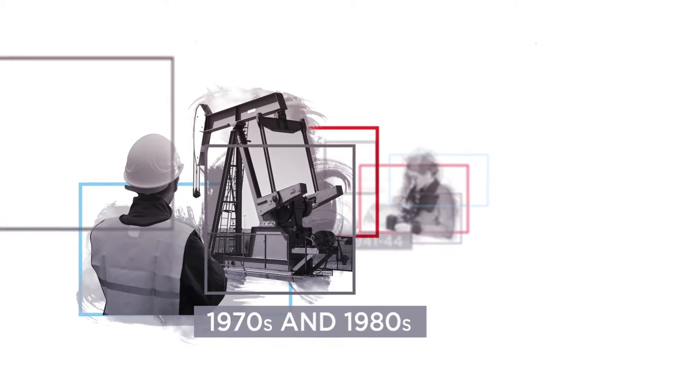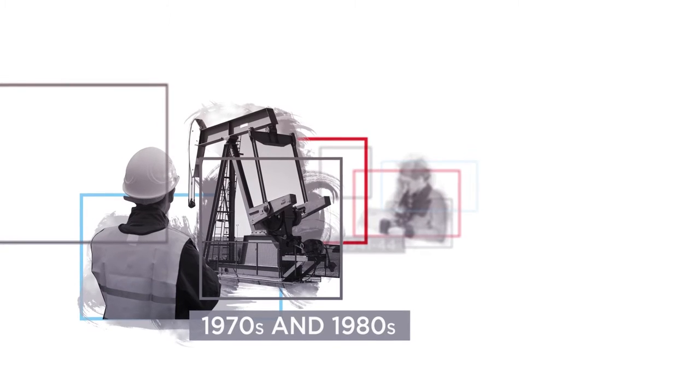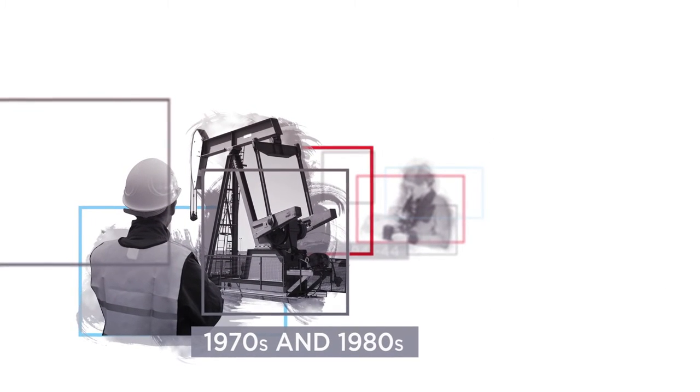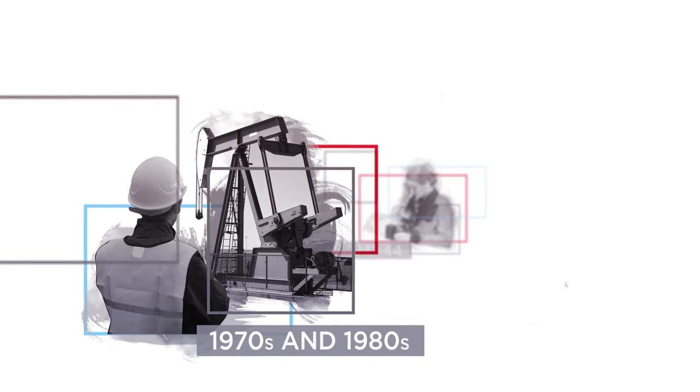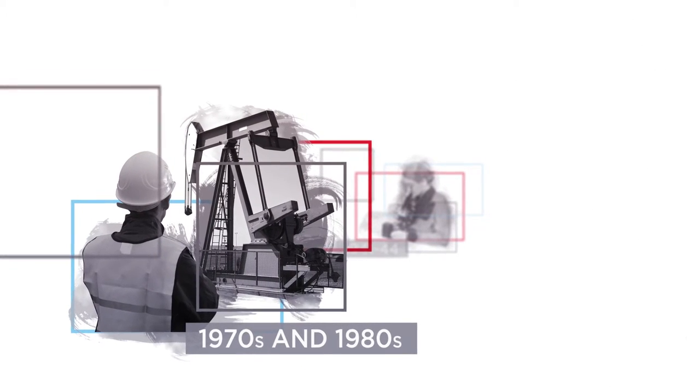In the 1970s, the oil crisis hit. This, along with growing environmental concern, led to a paradigm shift in architecture, with many European countries introducing legislation on energy efficiency, often at the expense of health considerations. Window sizes were generally reduced, while buildings became more airtight, often leading to inadequate ventilation.